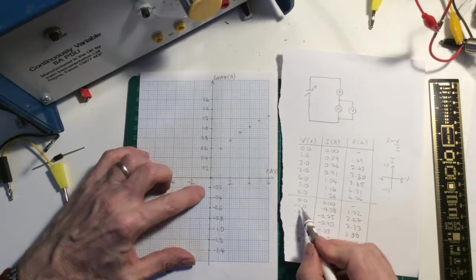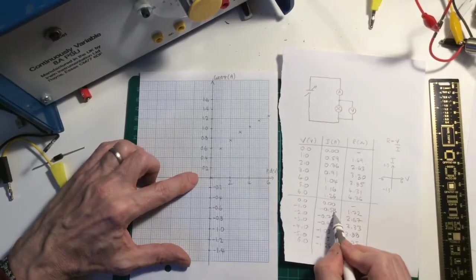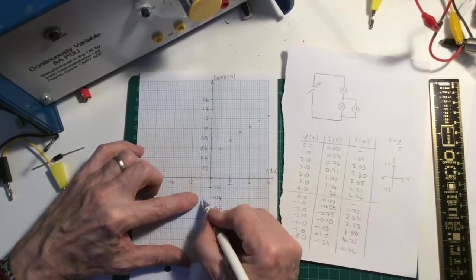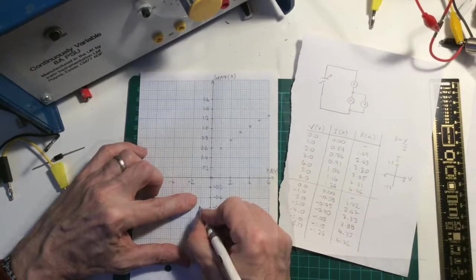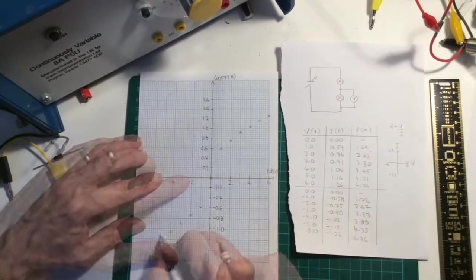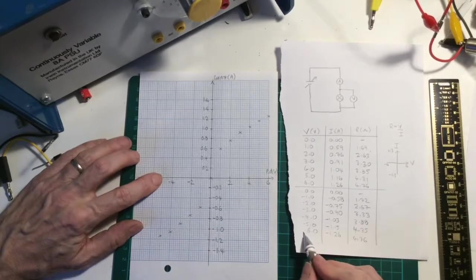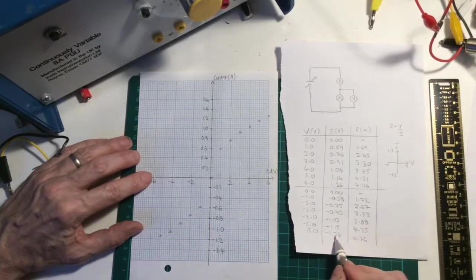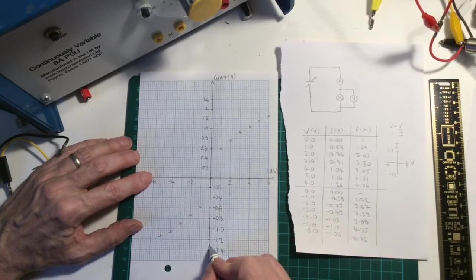And our negative voltages, one volt is minus 0.58, minus 0.58. And minus six is minus 1.26, minus 1.26.